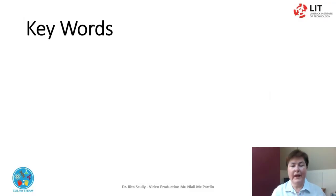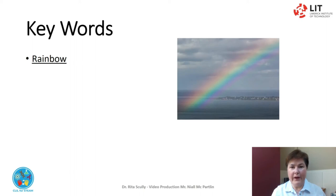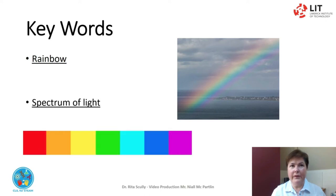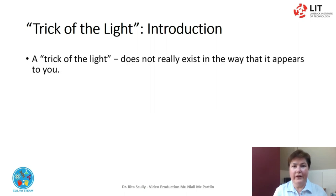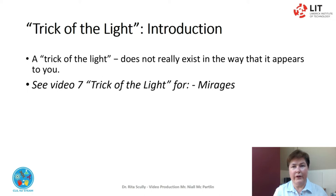Key words. In this video we will use a number of key words. Rainbow: a rainbow is created when white light is bent or refracted while entering a droplet of water. It is split into separate colours and reflected back. Spectrum of light: this means the visible spectrum, the range of wavelengths of which our eyes are sensitive to. Trick of the light: a phrase used to mean that what you are seeing is an effect caused by the way the light falls on things. It does not really exist in the way that it appears to you.